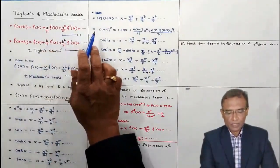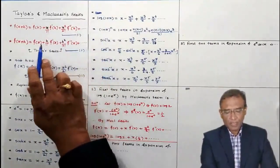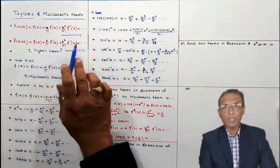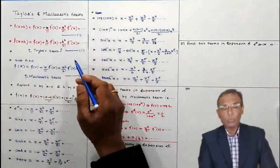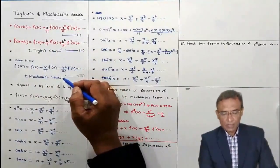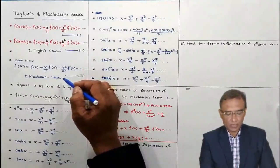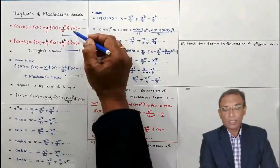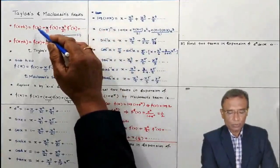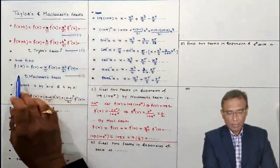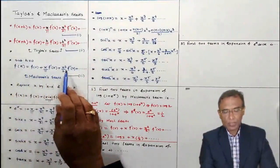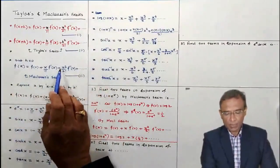Yes, these are infinite series with infinite number of terms. I have written the first three terms; you may write more terms also. Coming to the Maclaurin series — the Maclaurin series is a special case of the Taylor series. In series 1, if you put h equal to 0, you get the Maclaurin series, which expresses the function of x in ascending powers of x.